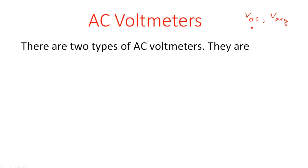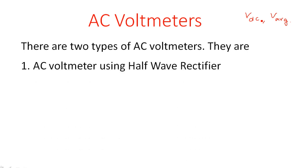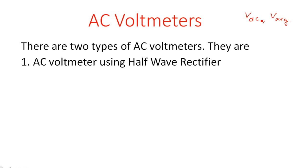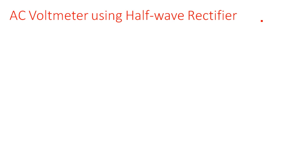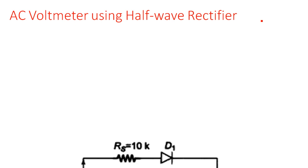So there are two possibilities: either you can measure VDC or V-average. By seeing this, there are two types of AC voltmeters. One is an AC voltmeter implemented using a half-wave rectifier section, or an AC voltmeter implemented using a full-wave rectifier section.